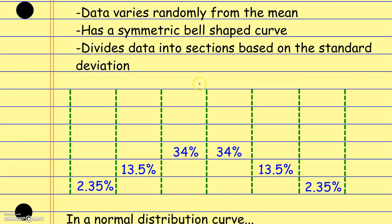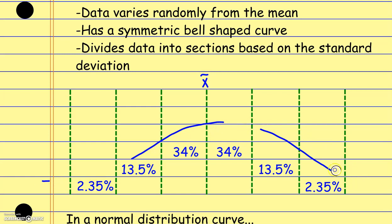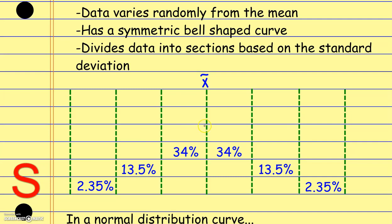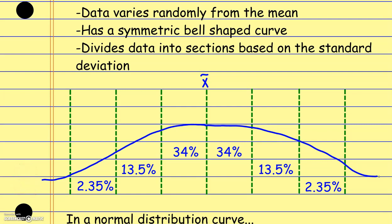Basically what we have in the center is our mean — right here in the center. The curve peaks in the center there. So when we look at the normal distribution curve, basically what happens is if I go plus one standard deviation in this direction...